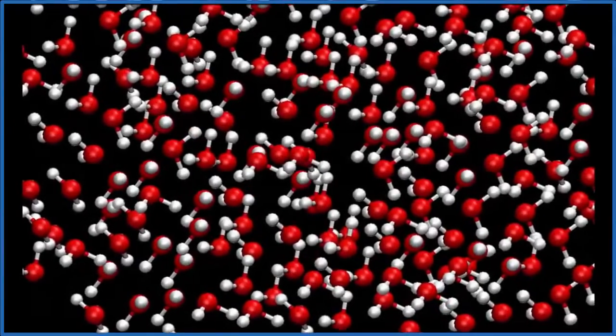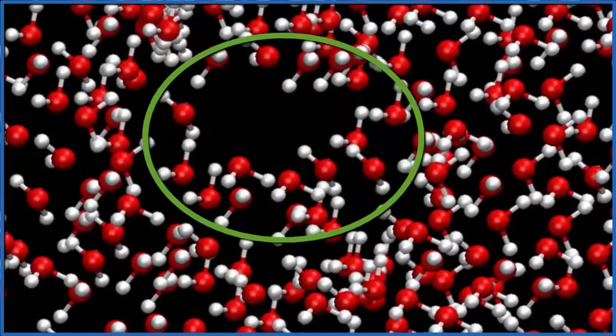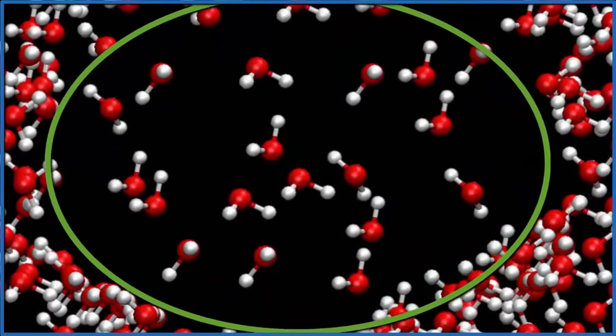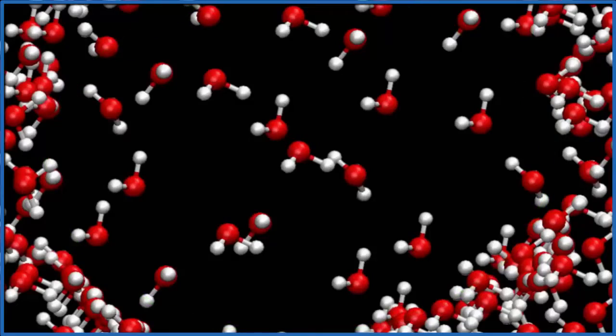To understand why bubbles form during boiling, imagine a group of water molecules, and as you add heat, some of them spread out and form a gas, water vapor. When they spread out, they push the molecules around them away, and that forms the bubble that you see. That bubble rises to the surface. That's boiling.